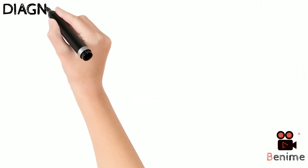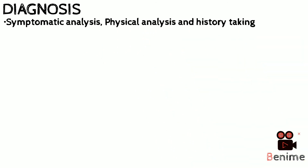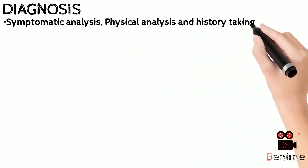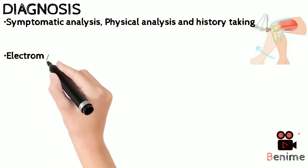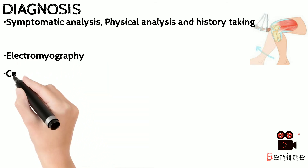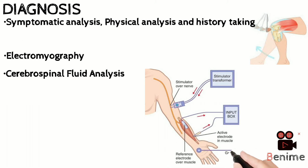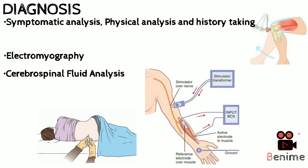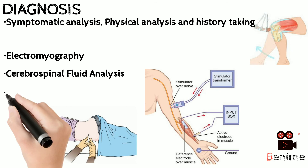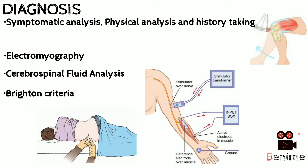Primary diagnosis of GBS is based upon symptomatic analysis, physical examination, and history taking. For confirmational diagnosis and differential diagnosis, electromyogram and CSF analysis can be done. The Brighton criteria is used for analyzing the severity of the patient and choosing the appropriate treatment regime.